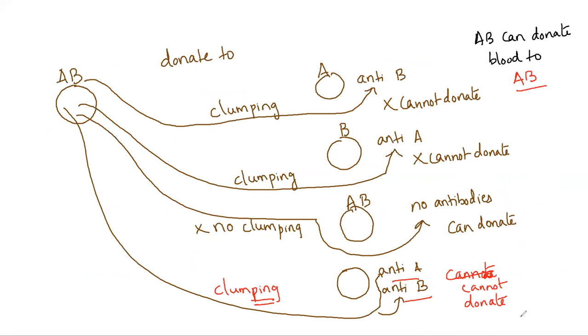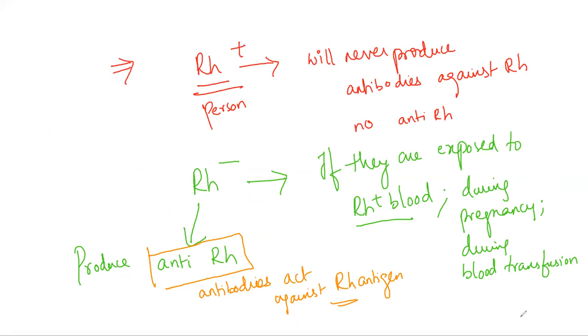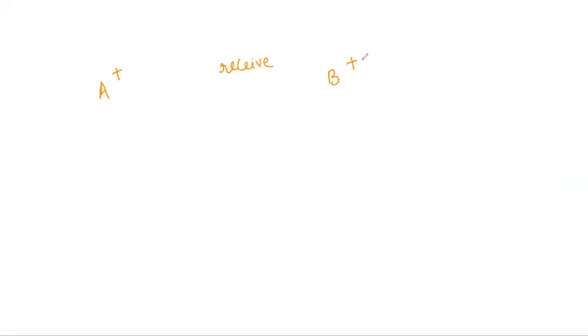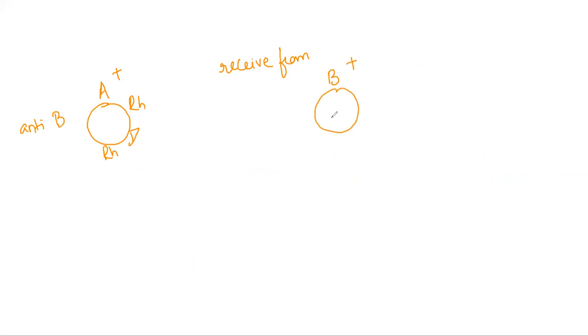Let me give one example. If an A positive person — having antigen A and Rh antigen, with antibody B but no anti-Rh — receives B positive blood, the B antigen reacts with antibody B, surely leading to clumping. You should not donate B positive blood to an A positive person. Another example: an A negative person has only antigen A but no Rh antigen. If receiving from B positive, the person will produce anti-Rh antibodies since they are exposed to Rh positive blood. The B antigen clumps with antibody B and the Rh antigen clumps with anti-Rh antibodies — a severely lethal, fatal reaction.